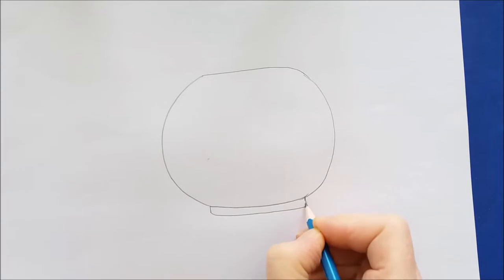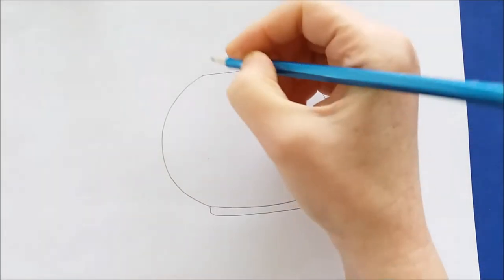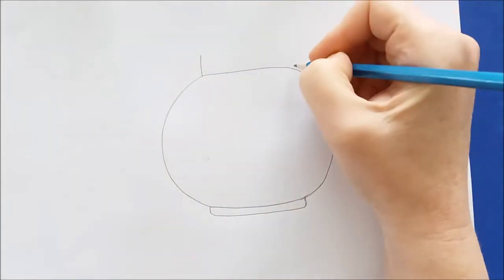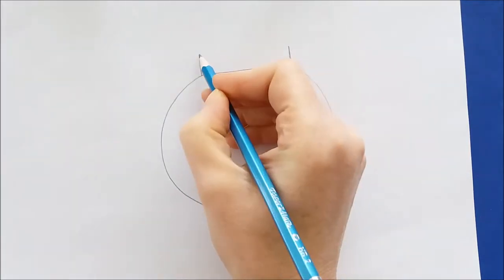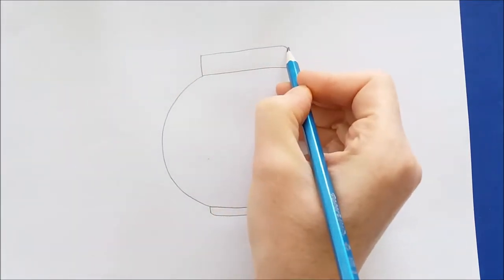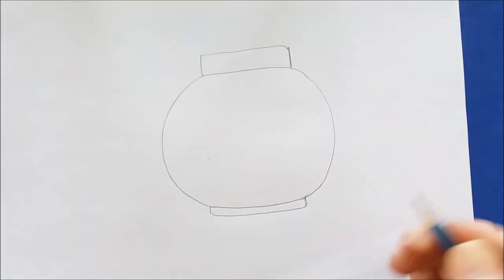And then on the bottom of this ball or bowl, we're going to add a little rectangle. And at the top, we're going to add a wider rectangle. This is our fishbowl.